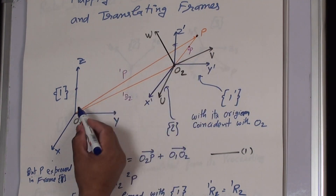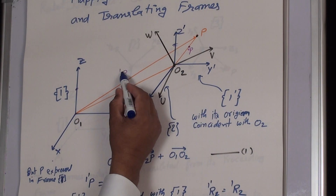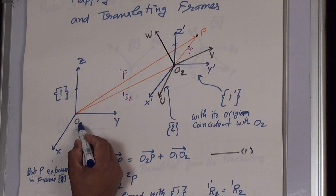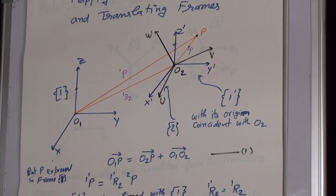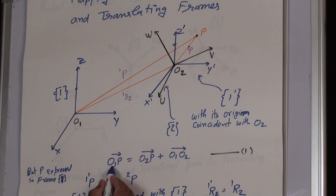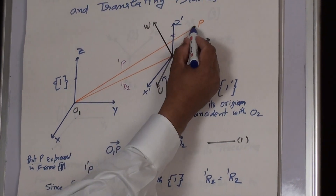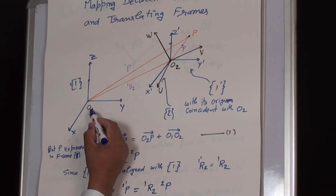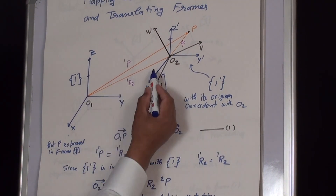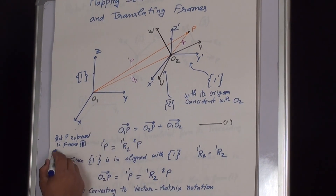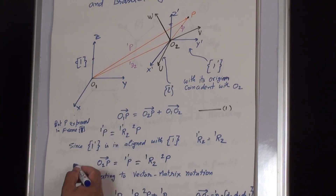The position of point p with respect to Frame 1 is denoted as p1, and the distance from origin o1 to o2 is denoted as 2d1. The vector equation can be written as: o1p = o2p + o1o2, meaning the vector from o1 to p equals the vector from o2 to p plus the vector from o1 to o2.